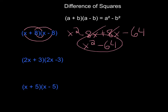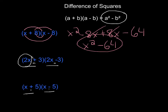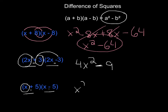Using the pattern: anytime you have two binomials that are the same except one has addition and one has subtraction, your answer will be a squared minus b squared. For the second example, square the first term: 2x squared is 4x squared. Square the second term: 3 squared is 9. It will always be subtraction. For the last example, square the first term: x squared. Square the second term: 25. So x squared minus 25.